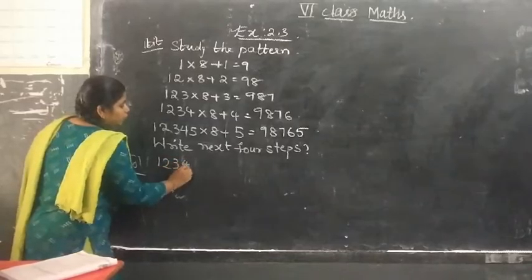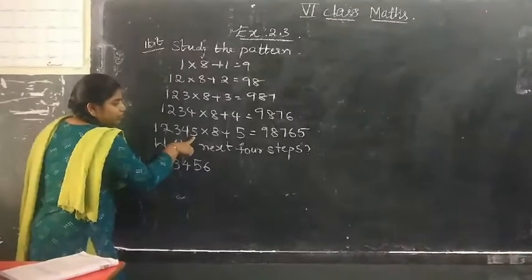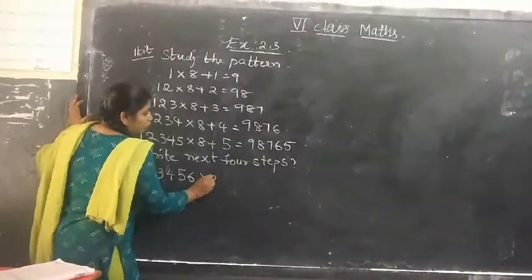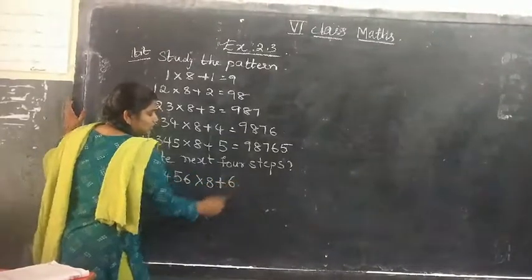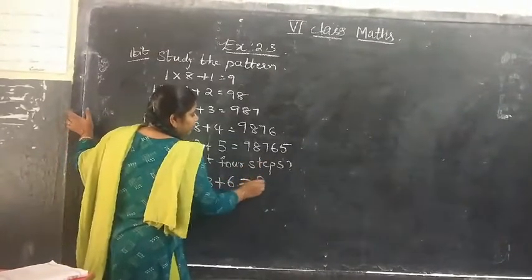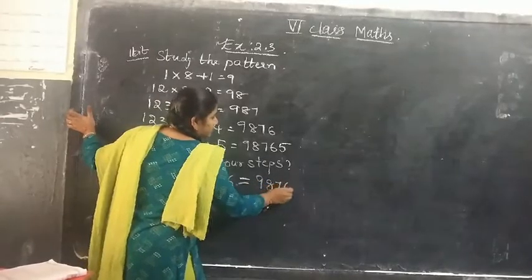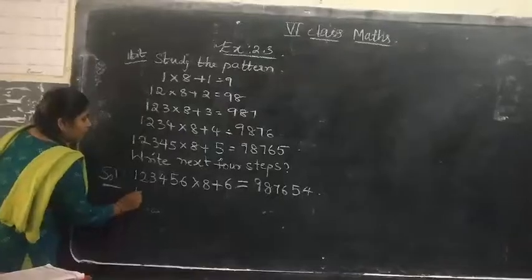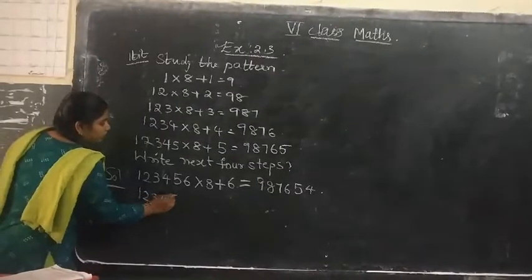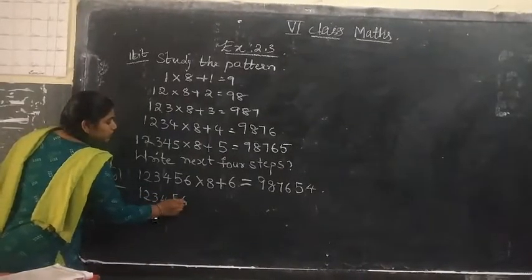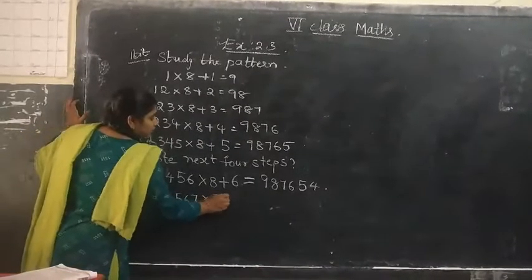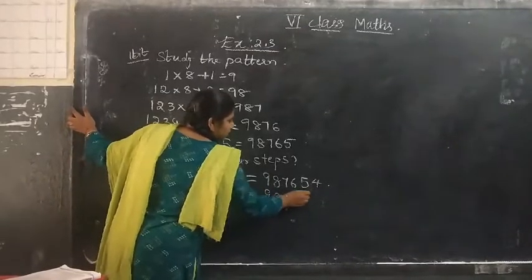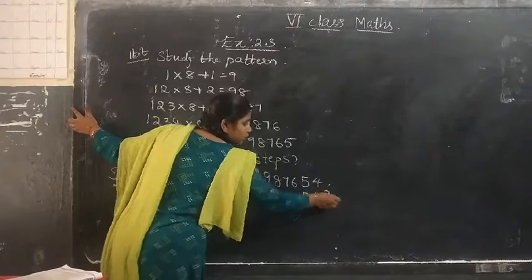So the next four steps are: 123456 × 8 + 6 = 987654; 1234567 × 8 + 7 = 9876543; 12345678 × 8 + 8 = 98765432.